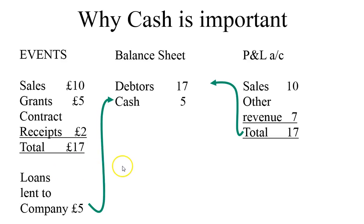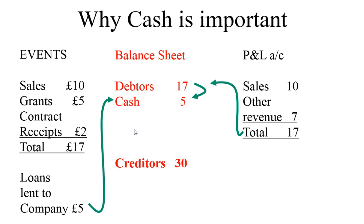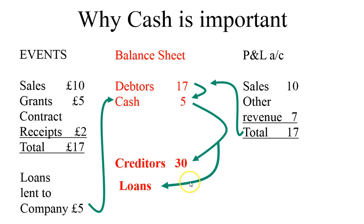These are assets of the company, but it's important that the debtors in particular are turned into cash. That's when the balance sheet starts to glow red hot, because you must make sure that your debtors are turning into cash and that your cash is then being used to repay creditors and loans as and when required. The creditors' need is more frequent than the loans, but failure to pay either can have dire consequences for the continuation of the business.